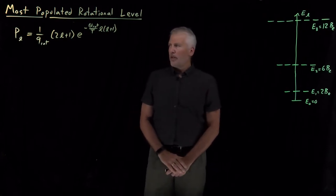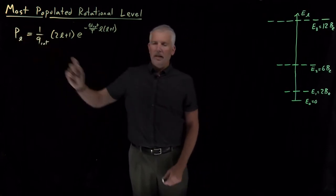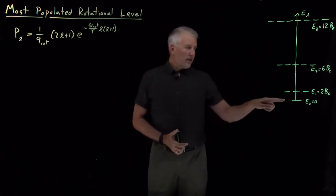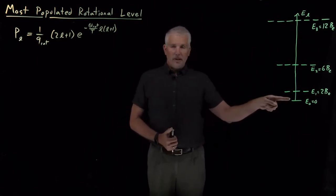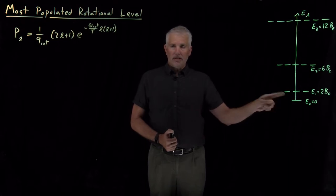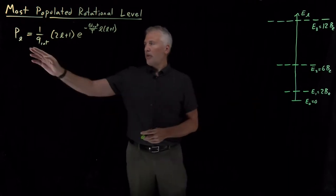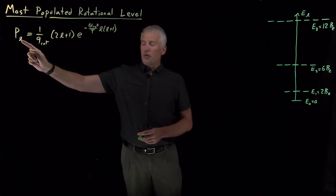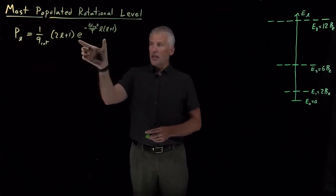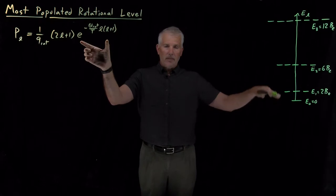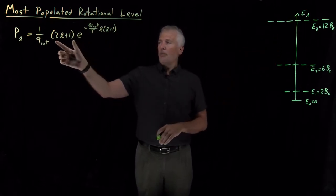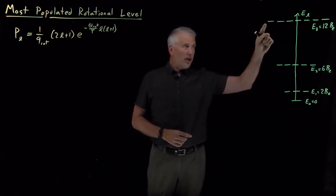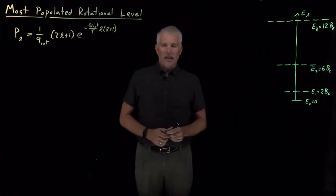We're now in a position where we can talk about the probability that each of the energy levels of a rigid rotor is occupied. The ground state we might have expected to be most populated, but it turns out that's not quite true, because the equation for the population of each energy level includes not just a Boltzmann factor for how high up the ladder the energy state is, but also a degeneracy. The higher up this ladder we climb, the more degenerate — the higher the number of states there are at that level.